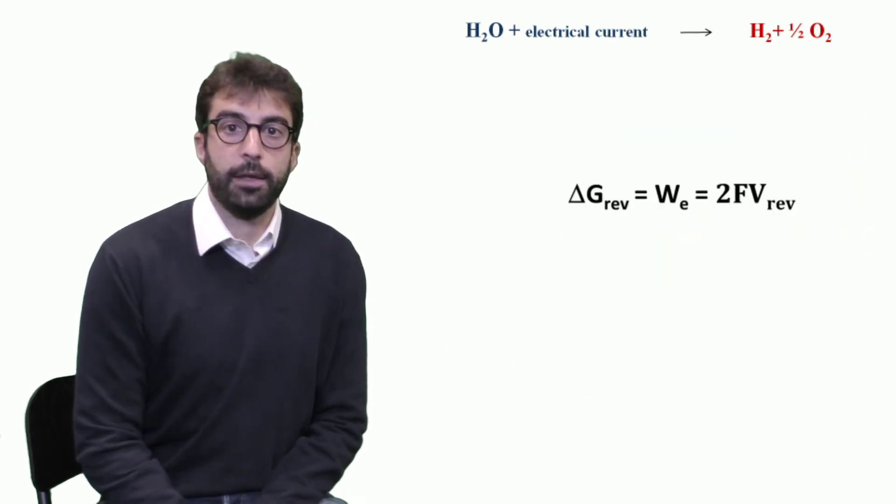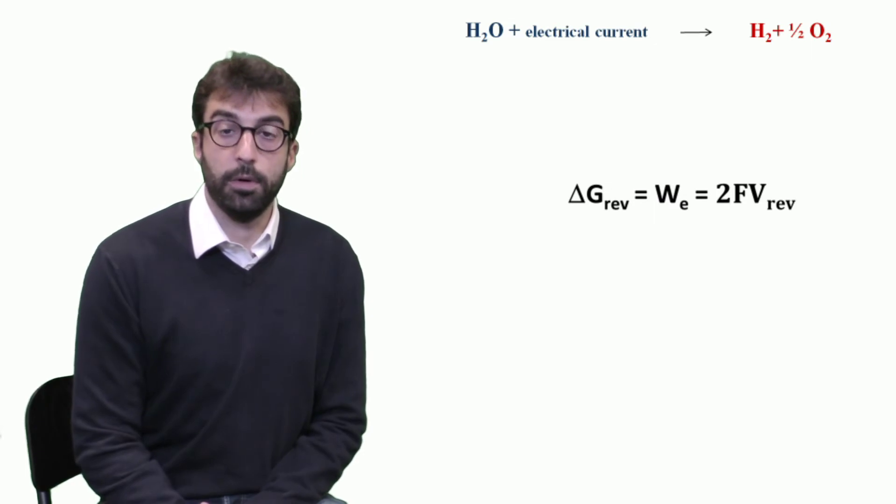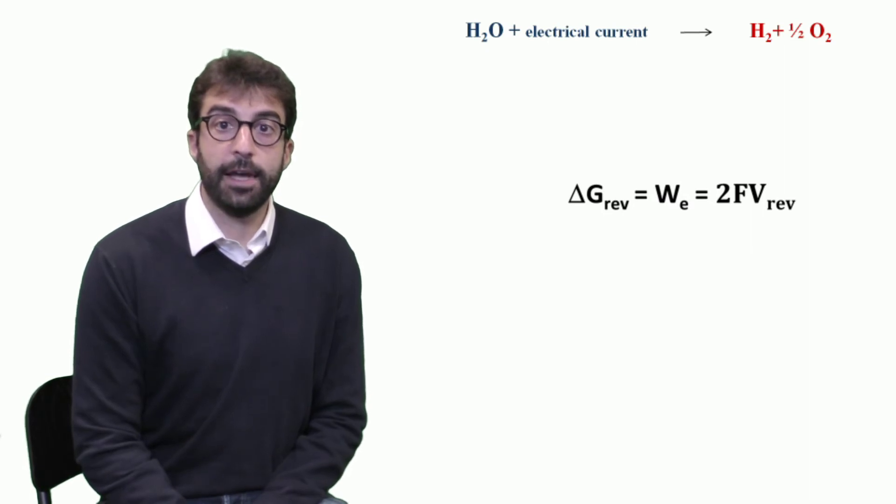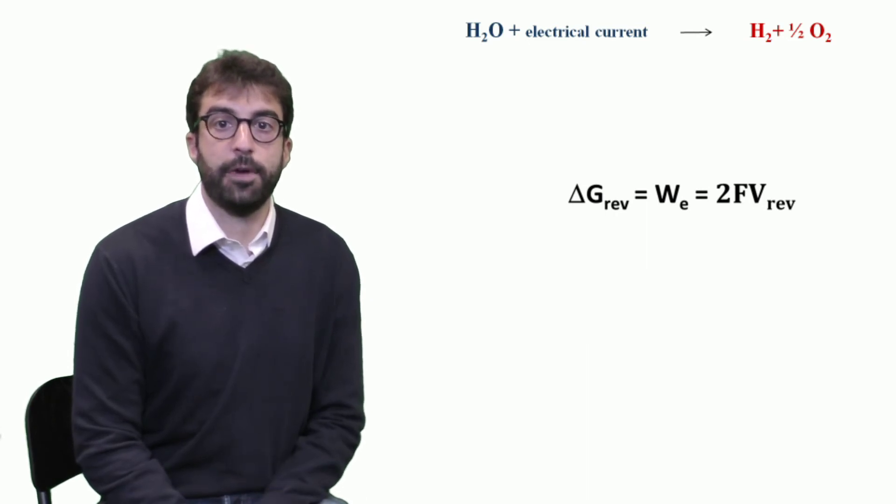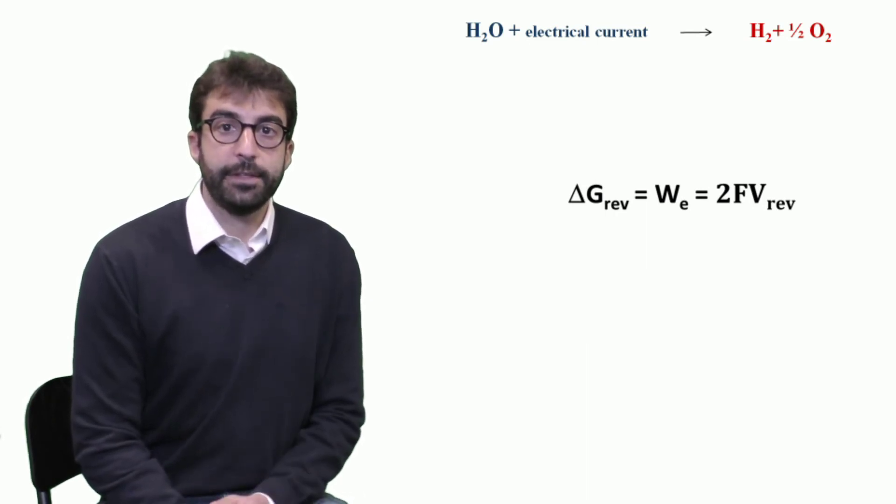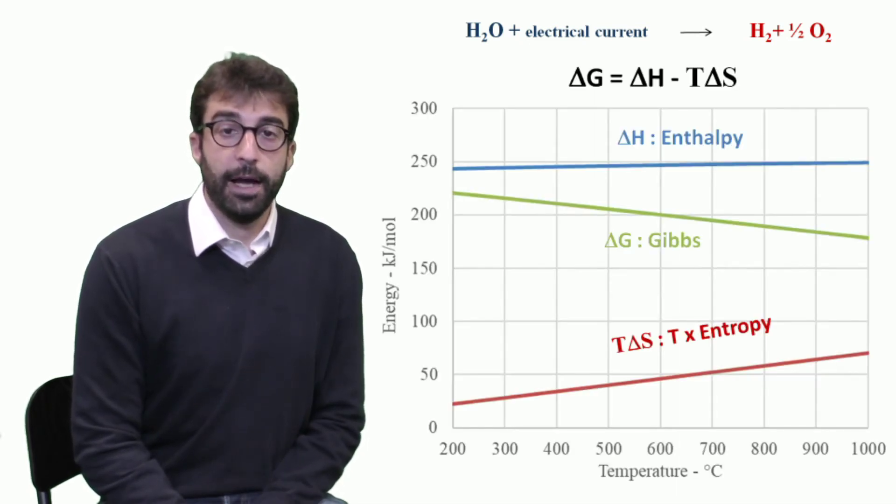Because Gibbs energy is directly related to the total amount of reversible voltage necessary to decompose water into the two elements. And this is directly related to amount of electrical work that is defined by the voltage multiplied by two times Faraday constant. This voltage is defined as reversible voltage and we can calculate it as a function of Gibbs.